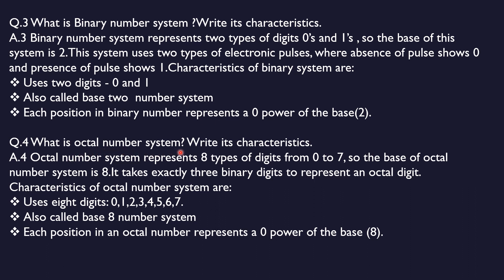The next question is: what is the octal number system? The octal number system represents 8 types of digits representing 0 to 7. The base of the octal number system is 8. It takes exactly 3 binary digits to represent one octal digit. The characteristic of this number system is that it uses 8 digits.